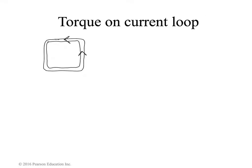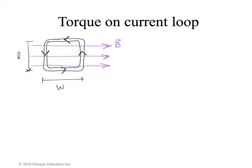I'm going to use the same current direction, but this time the magnetic field is perpendicular to the plane of the loop, going to the right. The loop still has width W and length L, and F equals I L cross B. Looking at the top and bottom: the current is either parallel or anti-parallel to the magnetic field, so there is no force — the magnitude of the top and bottom forces is zero.